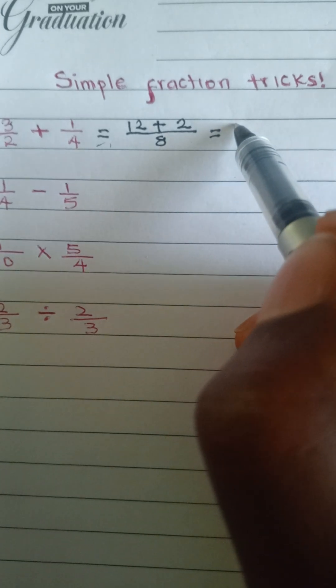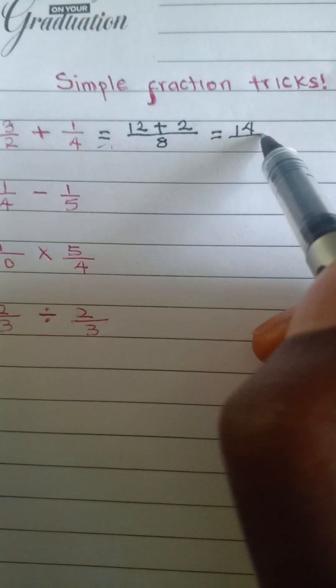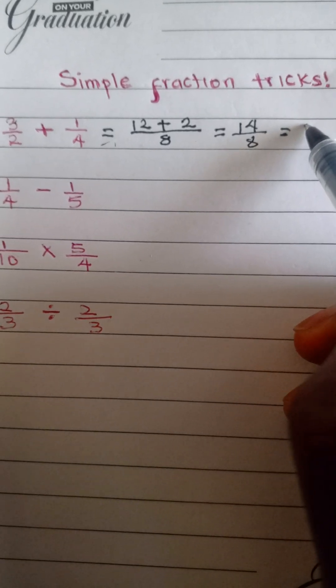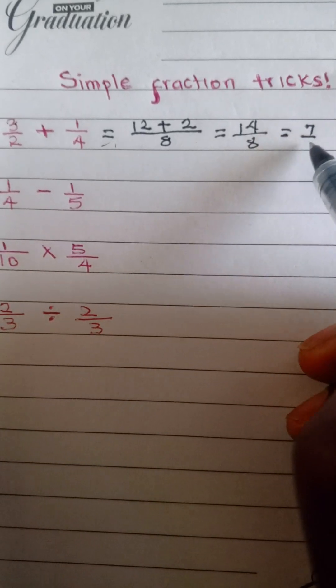So you're going to have 14 divided by 8, which is going to give you 7 over 4.